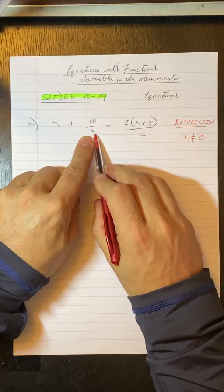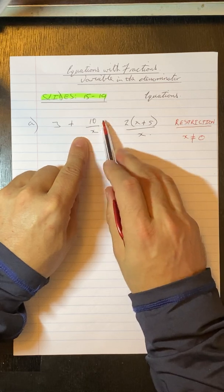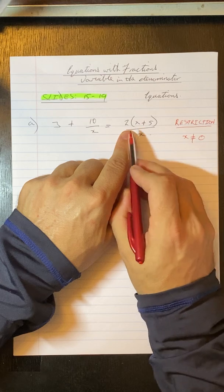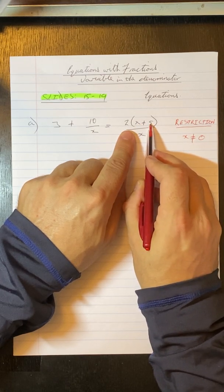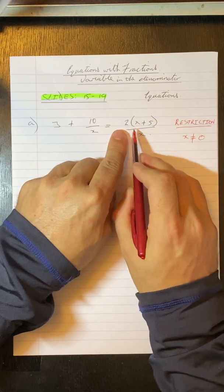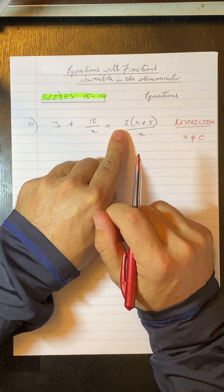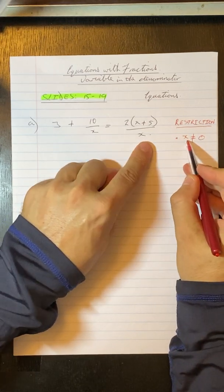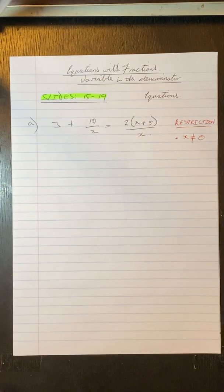Because if I make x equal to zero here, I've got 10 divided by zero — that is undefined, we can't do that. Over here if I made x equal to zero: 0 plus 5 is 5, 5 times 2 is 10, but then we're dividing by zero, so it's 10 divided by zero. Again that is undefined. So you must write your restriction and state that x cannot be equal to zero.